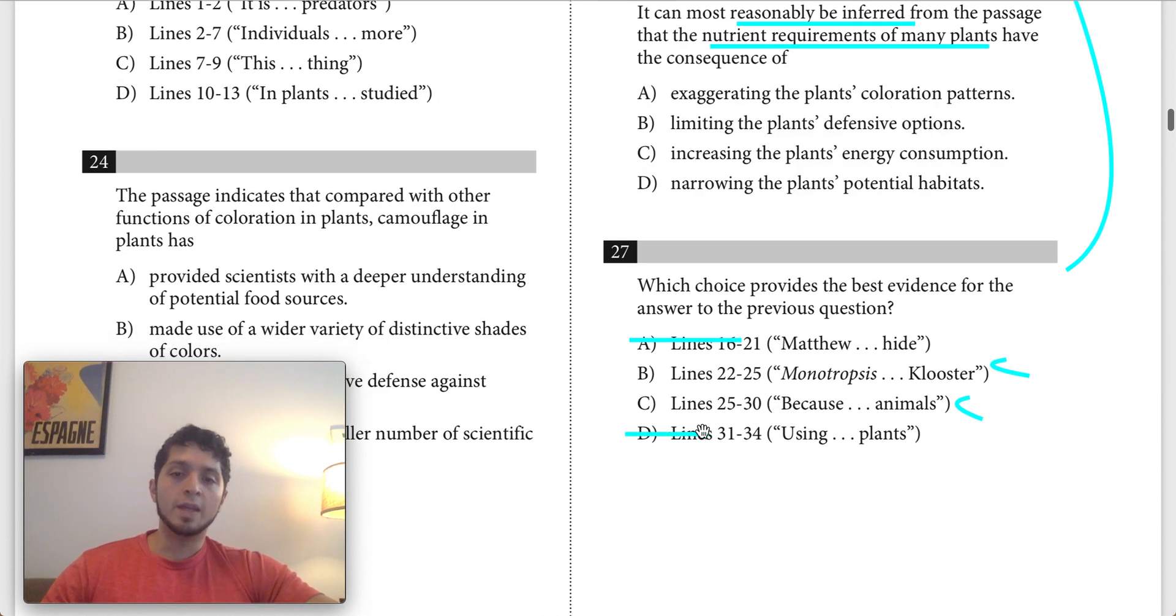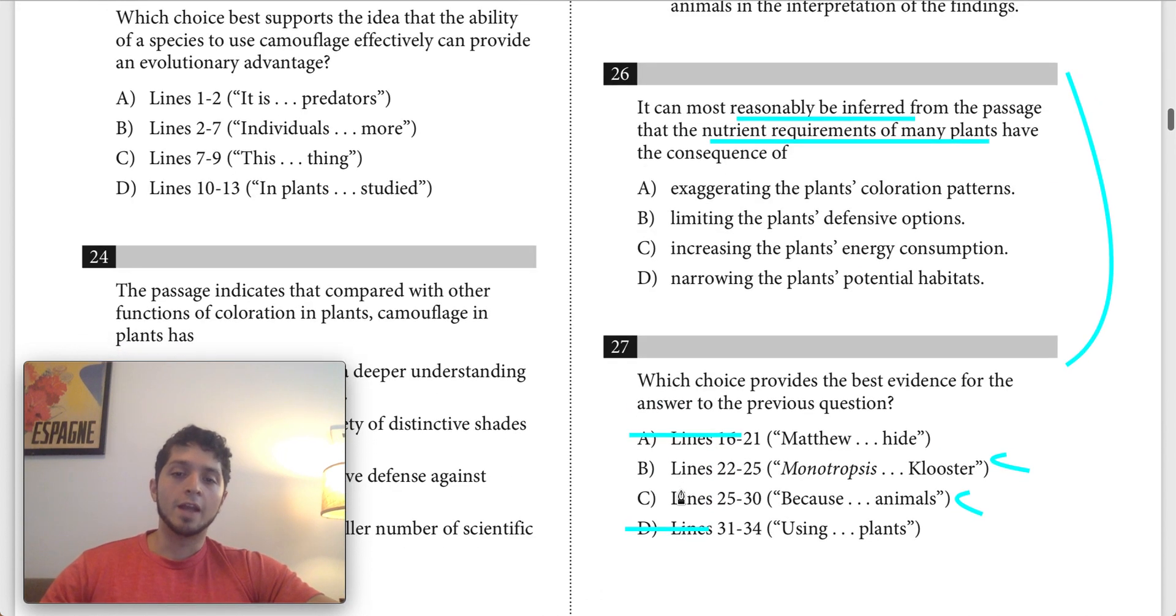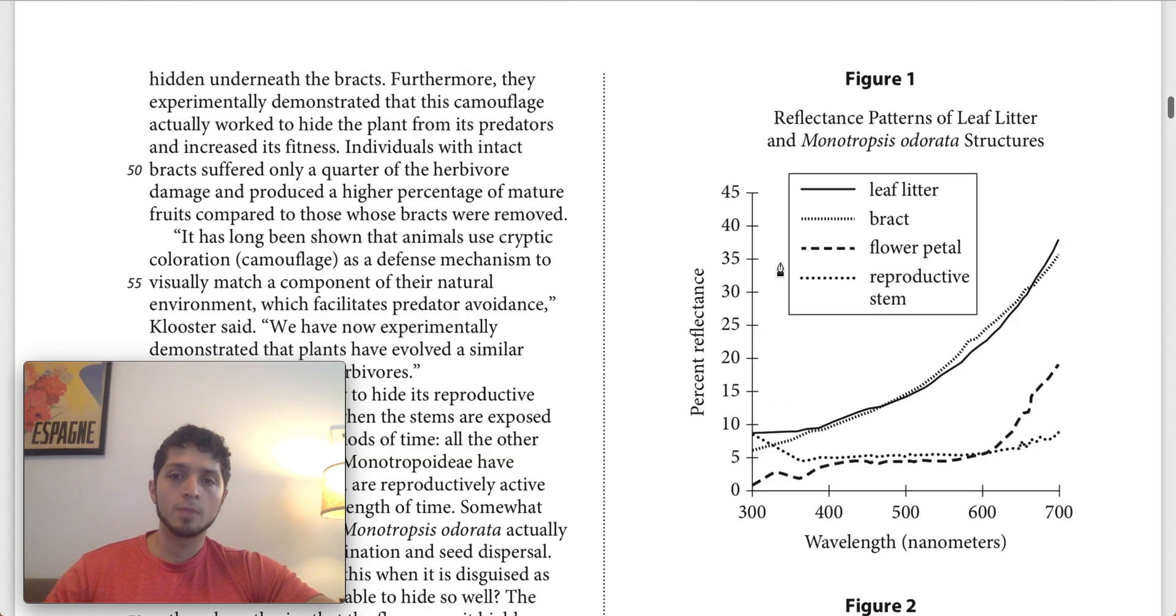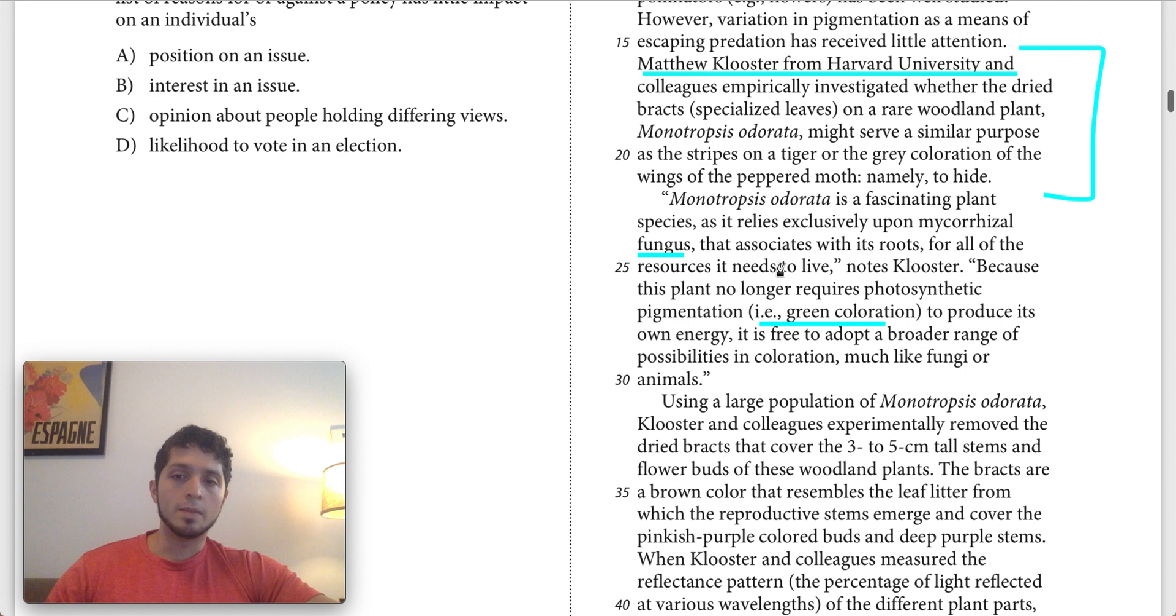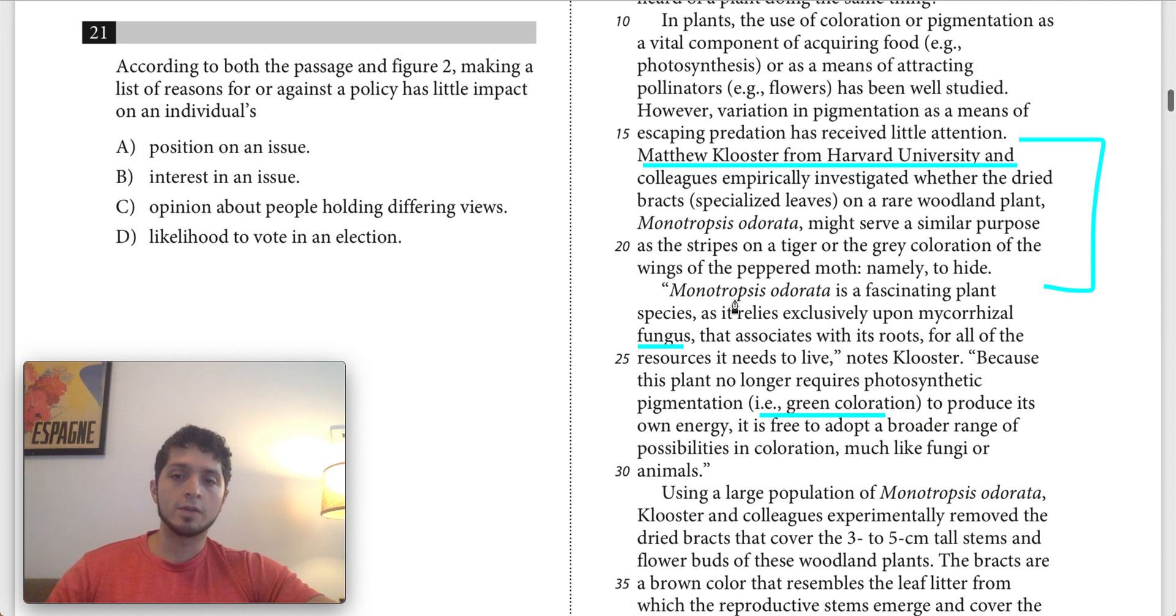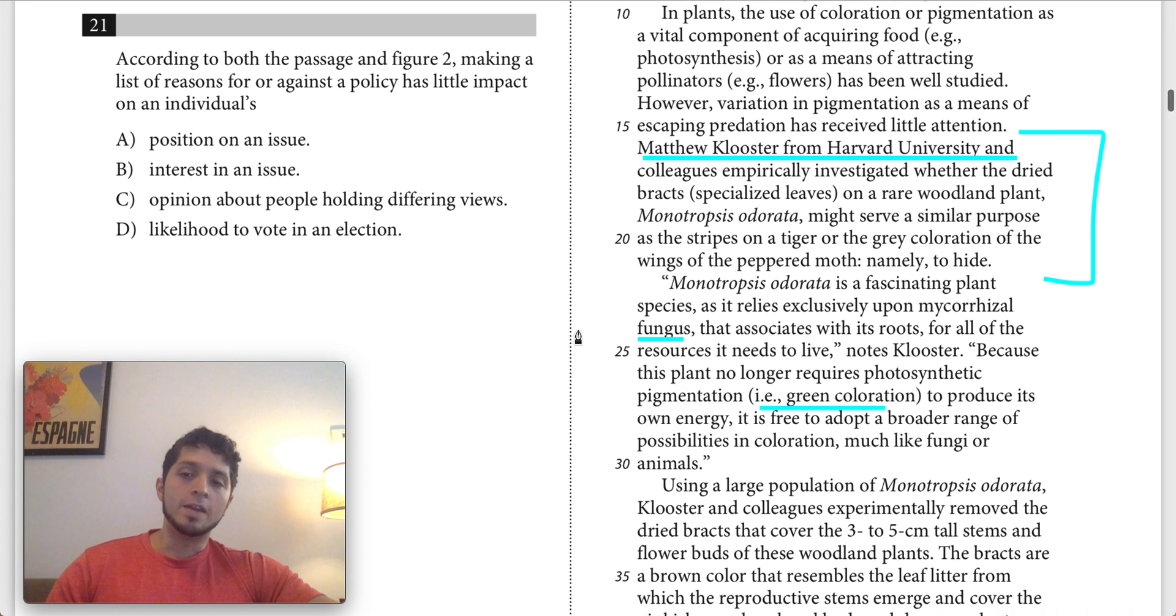Now we have B and C that we're left with. Let's see if we can eliminate one of these before going back to 26. We want to choose the one that most directly tells us about nutrient requirements of many plants. So looking between these, the main thing I notice is that this first sentence for answer choice B is only talking about monotroposis odorata. It's only telling us that it gets all of its resources from a fungus.